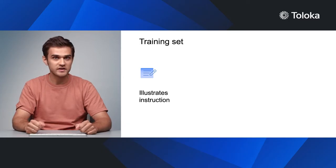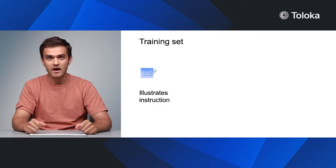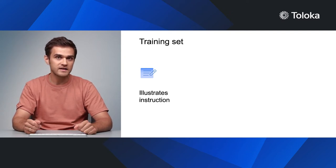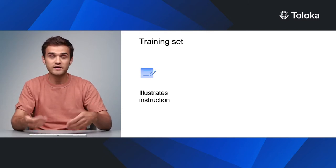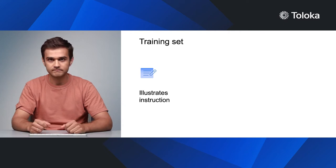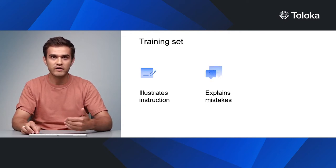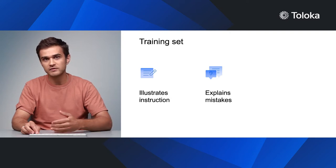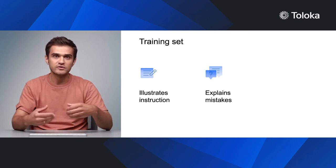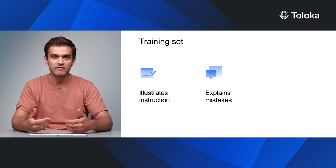Now that we have selected our potential performers, they need to be trained. In our context, training involves a set of tasks with comments that performers will see when they give an incorrect answer. An effective training set should demonstrate all the guidelines from the instructions, even the simplest ones. You can use several examples for more complex guidelines. Explain why a given answer is correct, or even better, reference a particular section of the instruction. This will give participants an extra reason to re-read and absorb the instructions, rather than clicking through the training as quickly as possible.